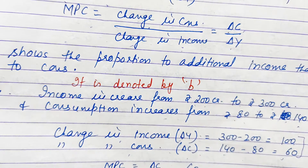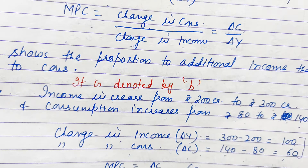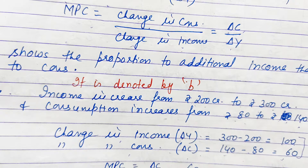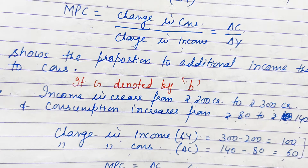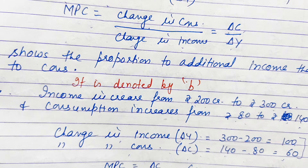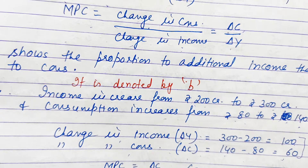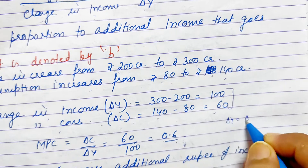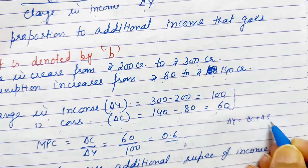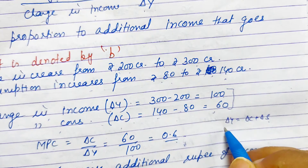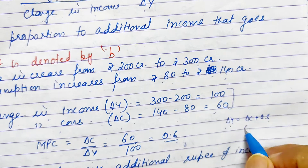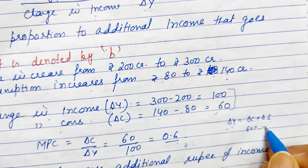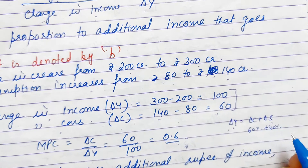So what does this show? It means that when income increases, 60% of the increase in income is to be spent on consumption expenditure, and 40% will go to saving. Because delta Y is also equal to delta C plus delta S — the increase in income also has the same two parts. If 60% is going to consumption, then 40% is going to saving.